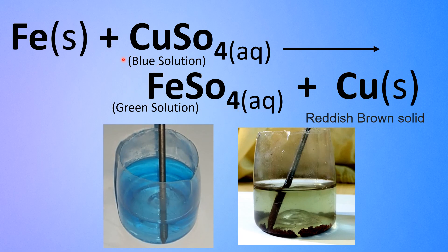And the copper, now that it is displaced, forms the reddish brown solid copper. Here, the blue solution is the copper sulphate solution and the green solution is the ferrous sulphate solution.